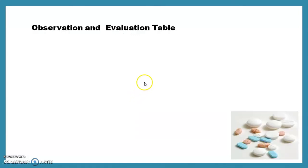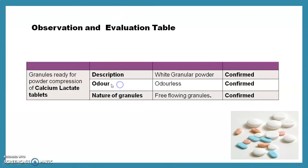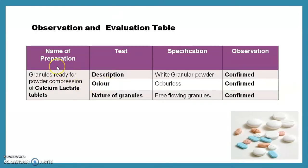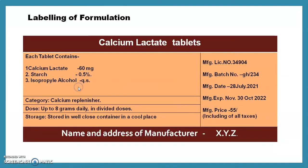After calculations, we move to the observation and evaluation table. Name of preparation: granules ready for compression of the calcium lactate tablet. Test — description: white granular powder, confirmed. Odour: odorless, confirmed. Nature of granules: free-flowing granules, confirmed.